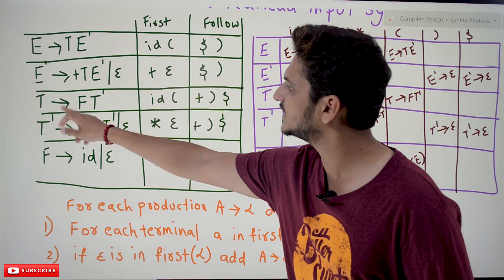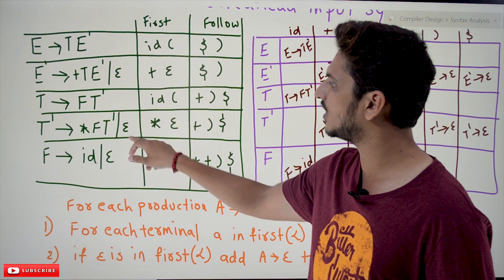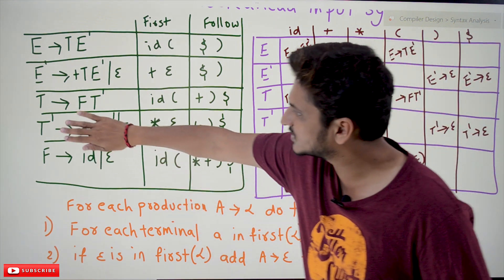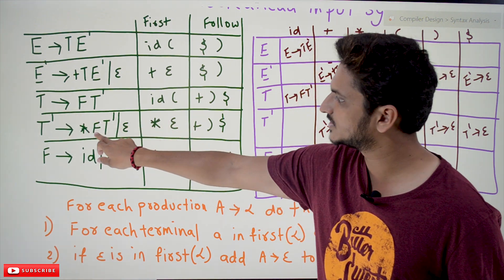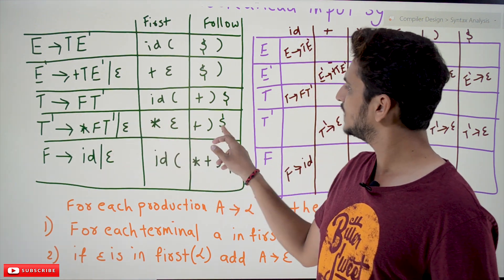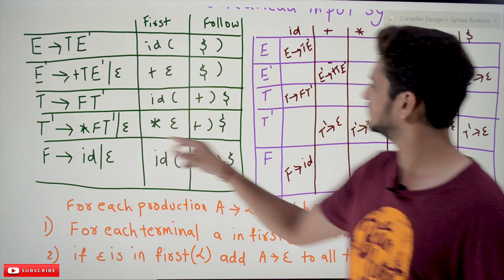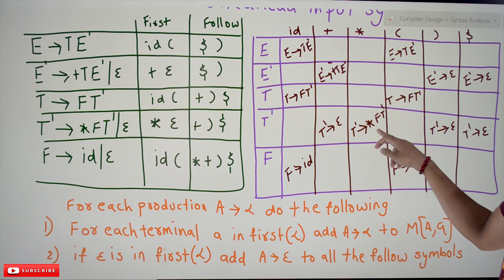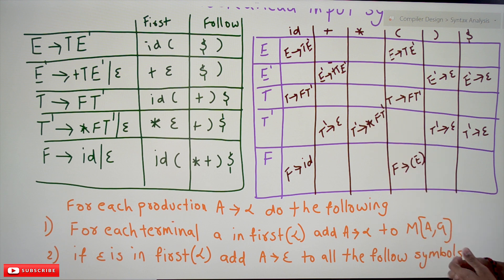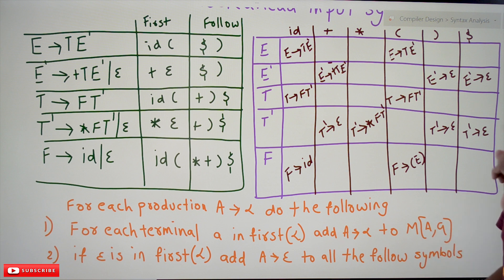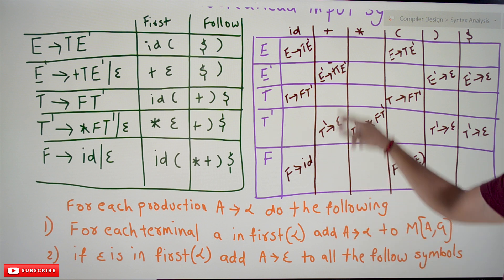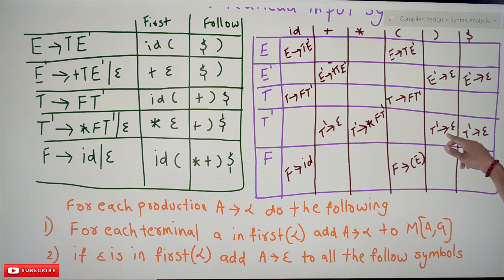For T' → *FT' | ε, FIRST(T') = {*, ε}. Rule 1: add T' → *FT' at M[T', *]. Rule 2: since ε is in FIRST(T'), add T' → ε to all FOLLOW(T') symbols. FOLLOW(T') = {+, ), $}. So T' → ε is added at M[T', +], M[T', )], and M[T', $].